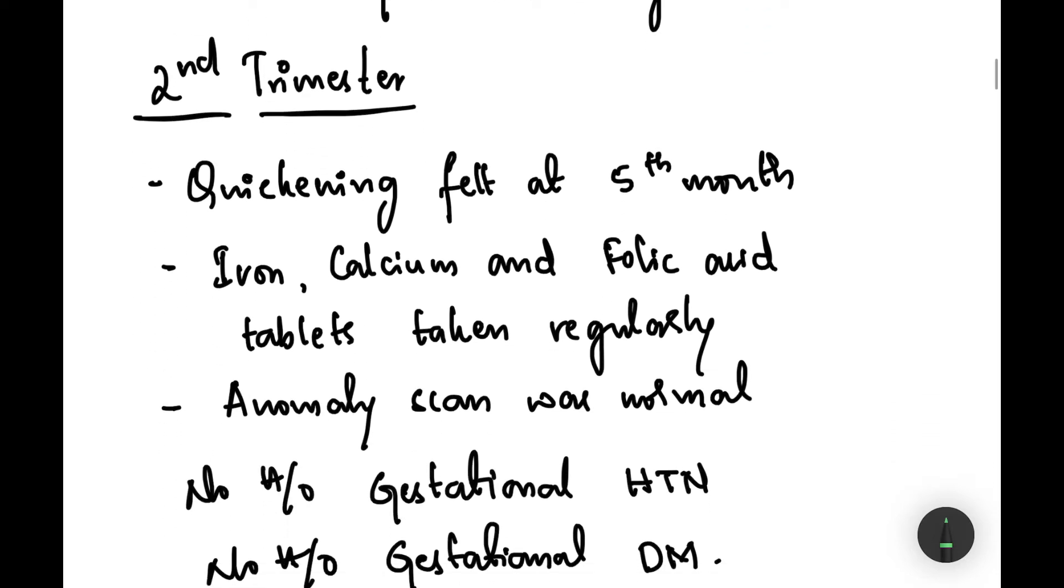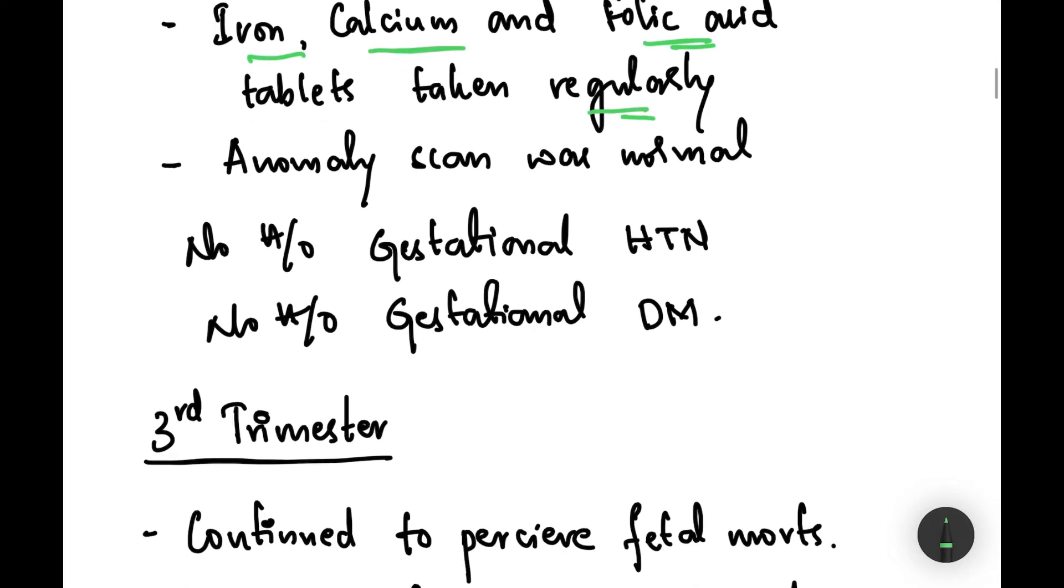Moving on to the second trimester, quickening was felt at the fifth month and iron, calcium, and folic acid tablets were taken regularly. An ML scan was found to be normal and there was no history of gestational hypertension or gestational diabetes.